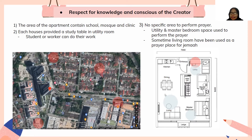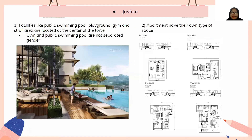Moving to the principle of justice: public facilities such as the swimming pool, gym, and store area are located at the center of the towers. This central location ensures equal access for residents of both Tower One and Tower Two, demonstrating fairness between the two towers.